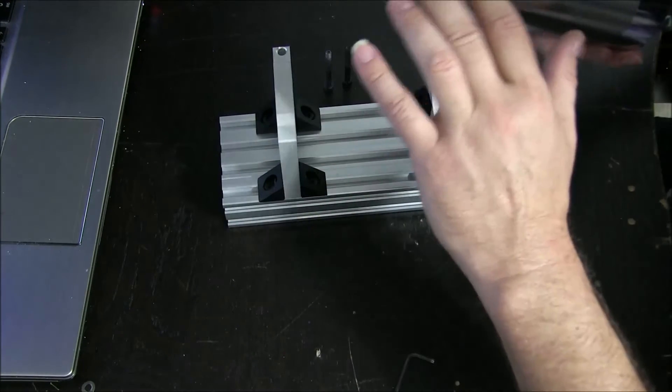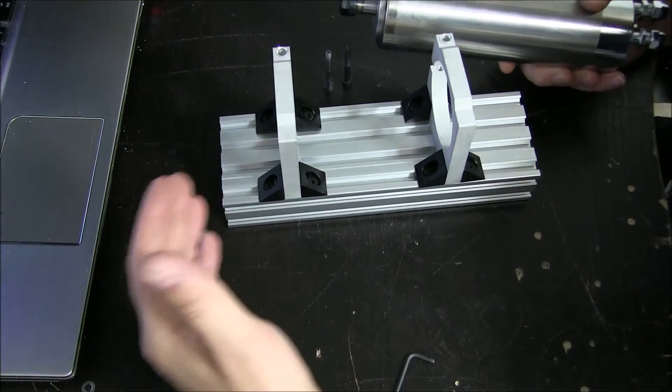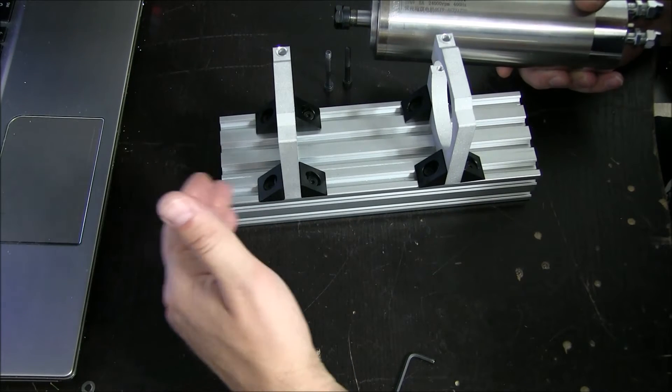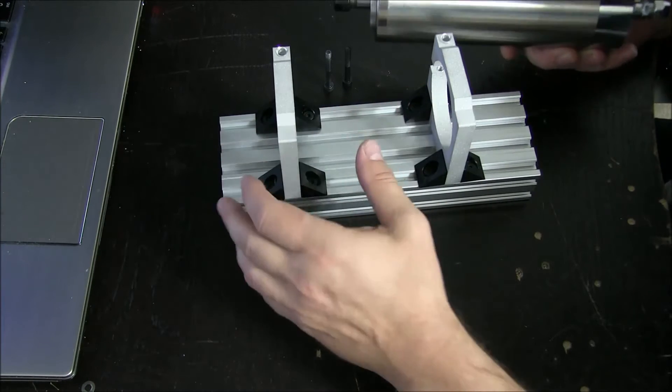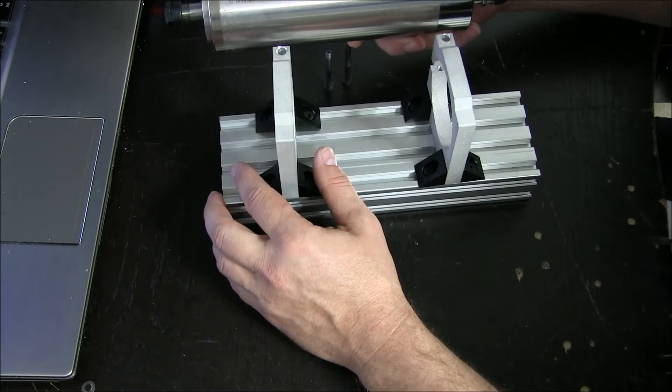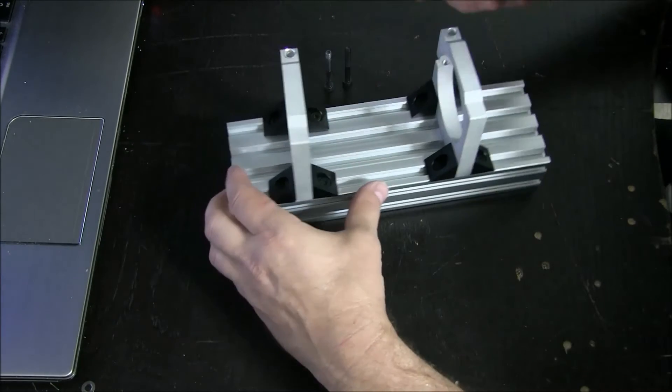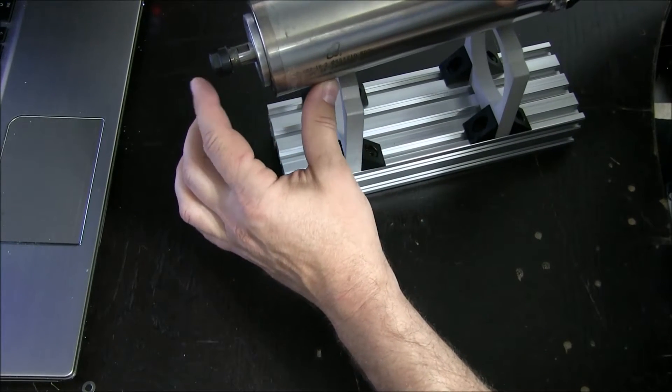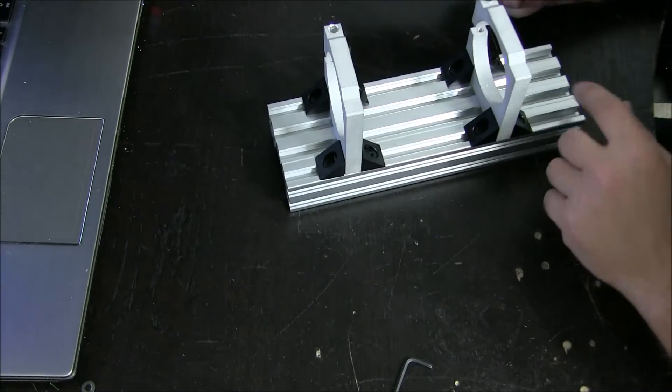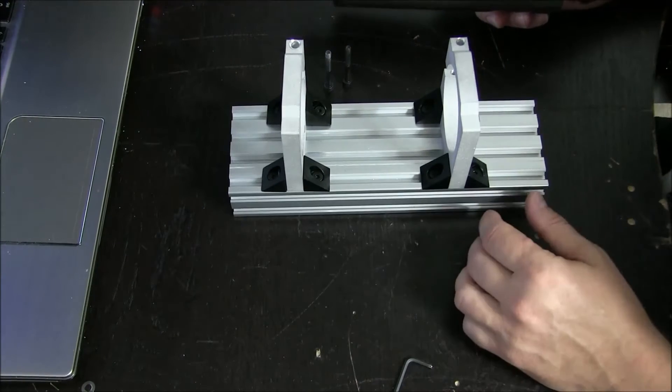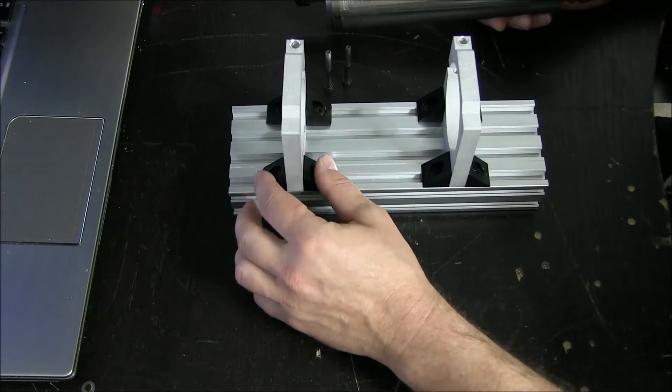So when you place this, think about what you're going to be machining. If you're going to do something where the spoiler board is lower for some reason than the Y gantries would typically have it, then you need to have the spindle farther down. If you're going to be machining as I've got it laid out where it mounts down the spoiler board, we simply need to make sure that there's a little gap in between the base of this and the base of the end cap here.